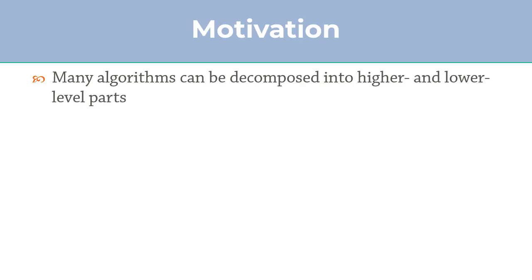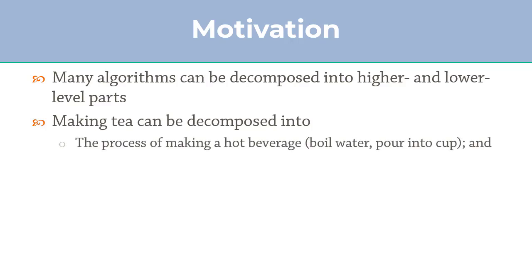Many algorithms can actually be decomposed into what I would call the higher and lower level part. For example, let's consider the process of making tea. The process of making tea can be decomposed into something high level like the process of making a hot beverage. It doesn't matter whether you're making tea or coffee or any other hot drink — you have to boil the water and pour it into the cup. That is the high level part, and then you have the tea-specific things.